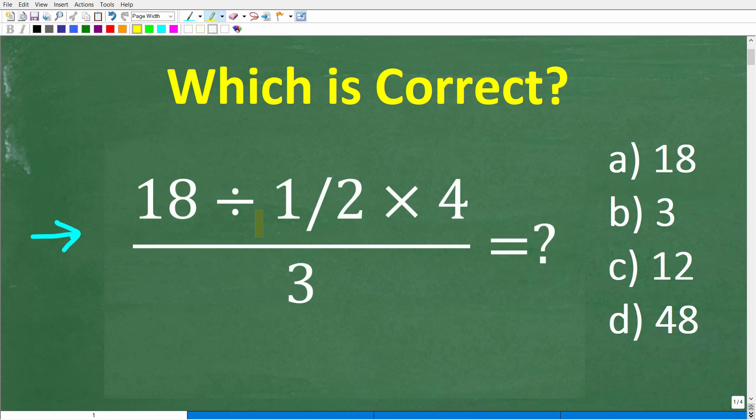Alright, so let's take a look at the problem. We have a fraction here, and the numerator, or the top part of the fraction, is 18 divided by 1/2 times 4, all of this divided by 3.